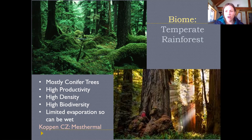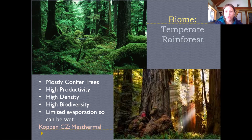These temperate rainforest areas are overall much wetter than other forests. In the Koppen climate zones, they are confined to the mesothermal zones — specifically the marine west coast subcategory within the mesothermal zones — which is where we find these kinds of temperate rainforests.